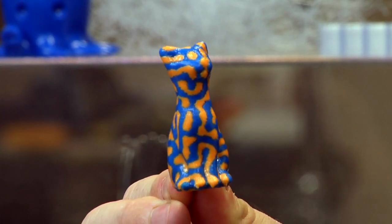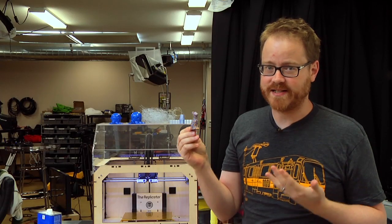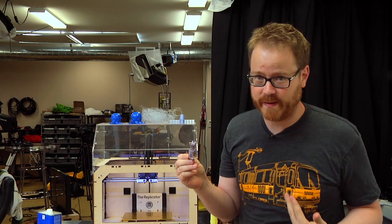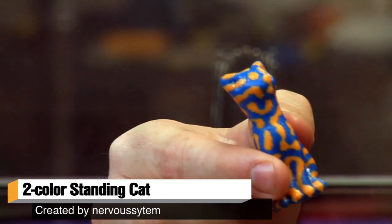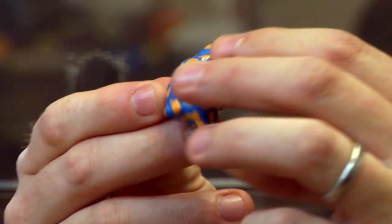If you guessed a two-tone standing cat designed by Nervous System, uploaded to Thingiverse, downloaded by me, and printed on our MakerBot, you would have guessed correctly. I don't know though, this looks like a sitting cat to me Nervous System, not a standing cat.